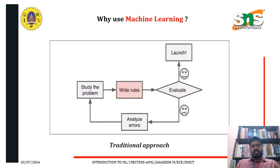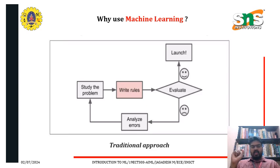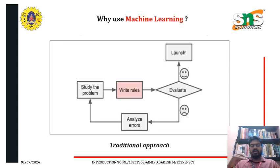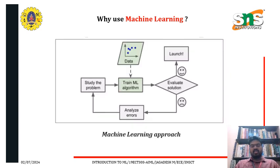In the traditional approach, we study the problem, write the rules, and evaluate. If the evaluation has errors, we have to study the problem again and write separate new rules because the previous evaluation went wrong. We repeat this cycle until the evaluation is good with no errors, and then the final product is released. This is the traditional way of approach.